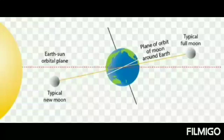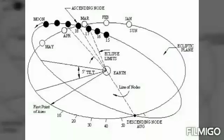You can imagine the ecliptic as the surface of water kept in a bucket, and the plane of the moon as a disk which is half immersed in water at an angle of 5.14 degrees from the water surface. The circumference of the disk will intersect the water surface at two points — or in other words, the orbit of the moon intersects the ecliptic plane at two opposite points.